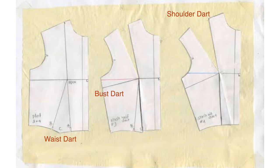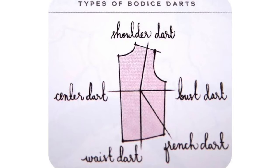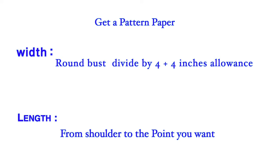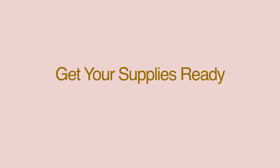Look at the pictures of where these darts are located, because we're going to be applying them on the basic bodice. For the width of my pattern paper, I divided my round bust by four and added four inches extra allowance. For the length, I placed the tape from my shoulder down to the point where I want my top to stop. Go ahead and get your supplies and measurements ready.